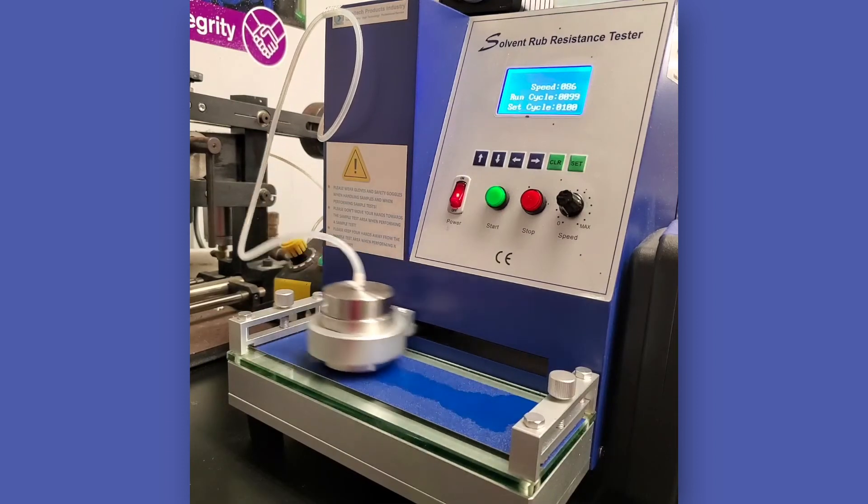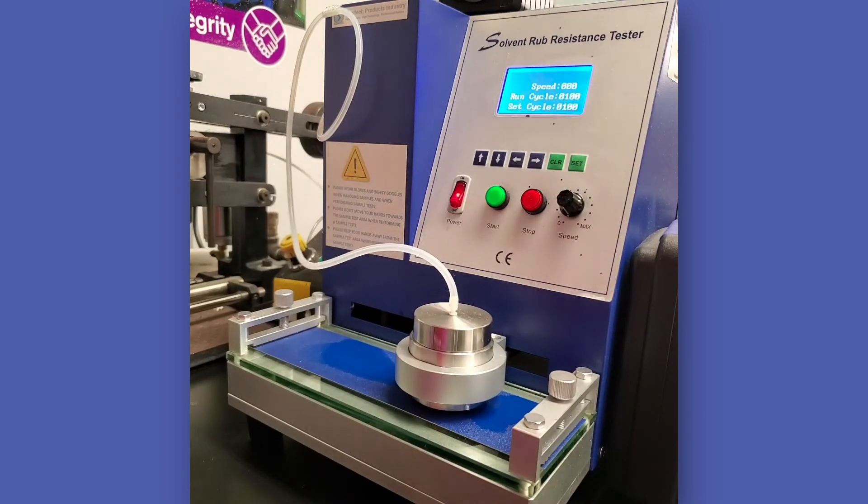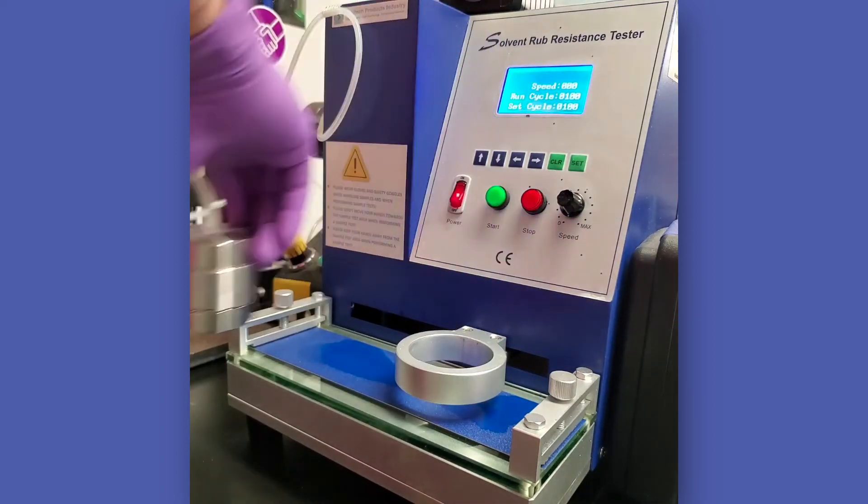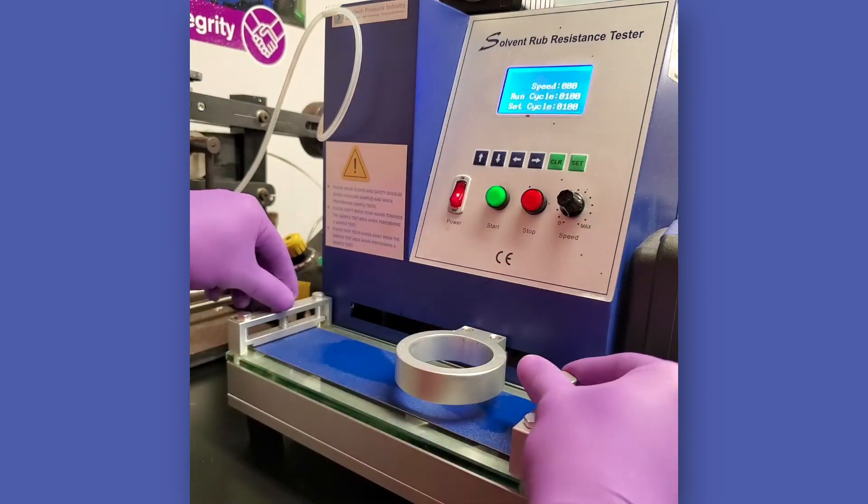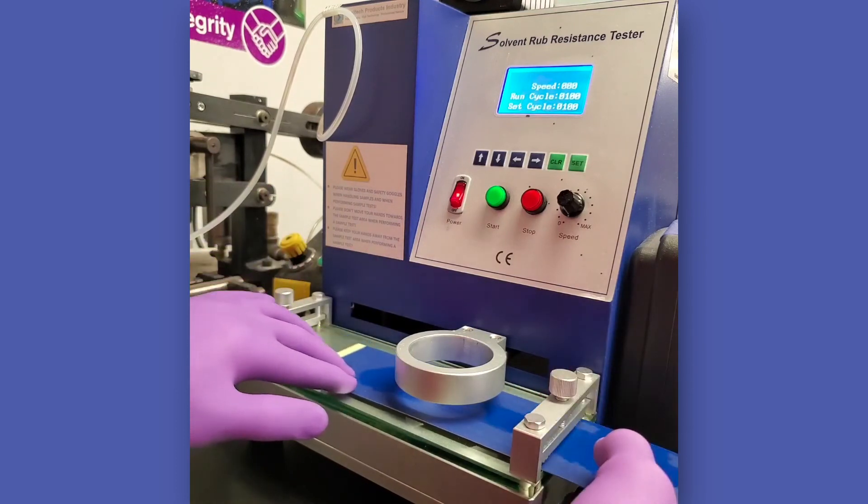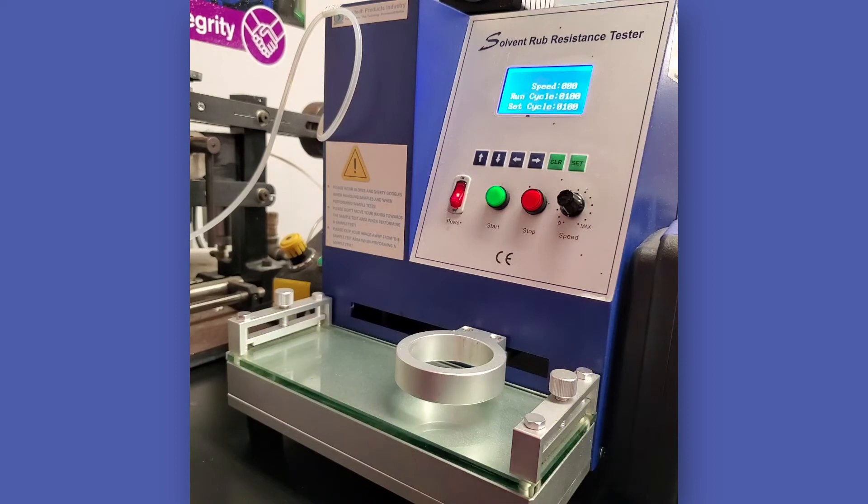The test may be run in two different ways. In the first method, the machine is allowed to run for the set number of counts as agreed upon between producer and user, and afterwards the coating is inspected for the appearance of the substrate or coating breakthrough. In this method, the result is pass or fail.